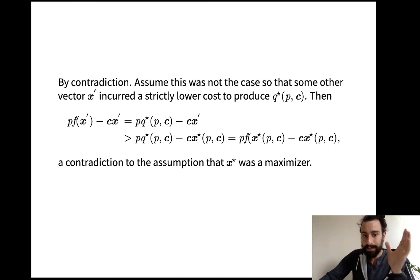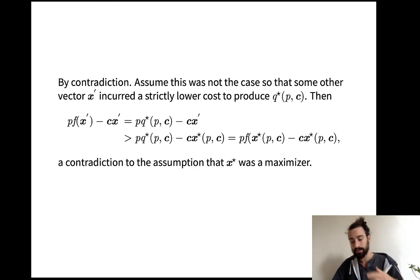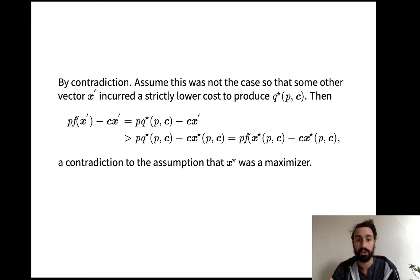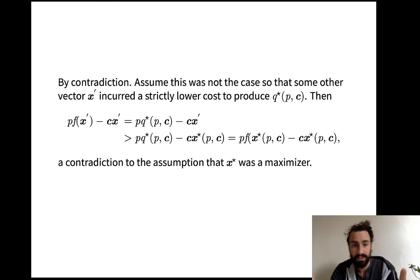I'll go over this again in the seminar because it's an important idea: we can think of profit maximization as a two-stage process — first you choose a level of output, then you choose the cheapest way to achieve it. We can use the cost function from the minimization process and restructure profit maximization accordingly. One stage is cost minimization, the other is choosing the optimal output. Hopefully that whets your appetite for the seminar.